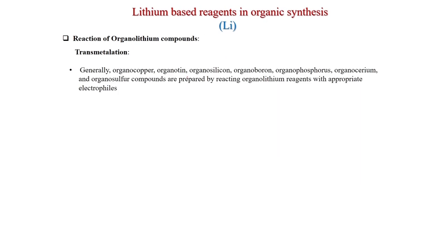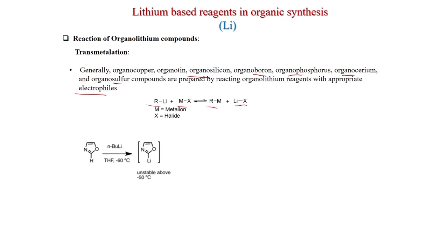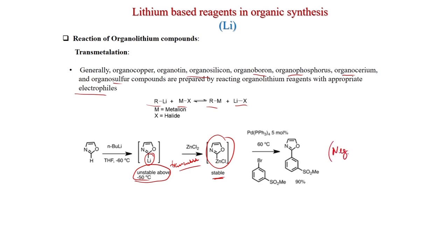Transmetallation: organocopper, organotin, organosilicon, organoboron, phosphorus, cerium, and sulfur compounds are prepared by reacting organolithium reagents with appropriate electrophiles (R-Li + MX → R-M + LiX). For example, an oxazole treated with n-BuLi gives an unstable lithiated species at −50°C; treatment with zinc chloride gives the stable zinc species (transmetallation). This zinc organometallic can be used in Negishi coupling with an aryl bromide using Pd(PPh₃)₄ as catalyst to give the product in 90% yield.